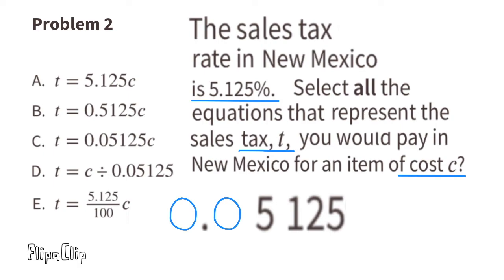We multiply 0.05125 times c to find the tax paid on an item in New Mexico. Equation A: t = 5.125c — that's 100 times too big, so not A. Equation B: t = 0.5125c — that decimal is 10 times too big, so not B. Equation C: t = 0.05125c — this is the correct decimal, so I would pick C.